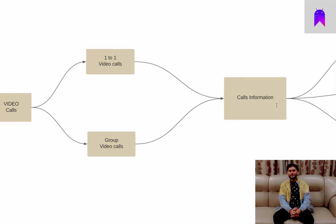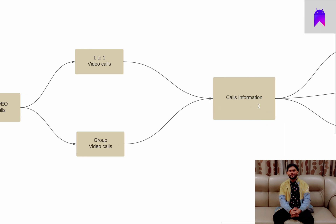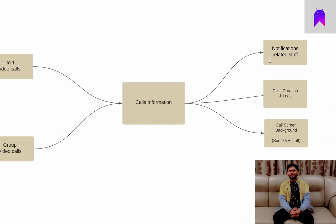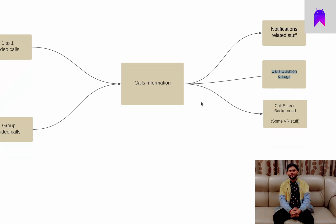All of these calls will have implementation regarding call information — like once a call is initiated, how many members were present, their names, when someone dropped, when someone joined, and what was the actual duration of that call. We are going to cater all of this. This call information feature will also handle notifications, which are a very important thing in a social media application. We will implement code regarding notifications, call durations, and logs.